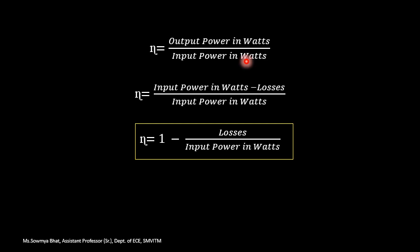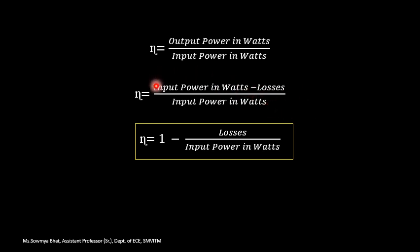Efficiency is output power in watts divided by input power in watts. If I describe output power in terms of input power and losses, it is input power minus losses divided by input power. Splitting this equation gives: input power divided by input power, minus losses divided by input power. The first term cancels to 1, so efficiency equals 1 minus losses divided by input power in watts — expressing the efficiency relationship in terms of losses and input power.